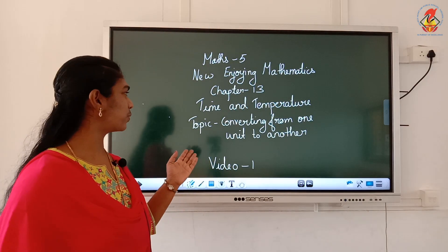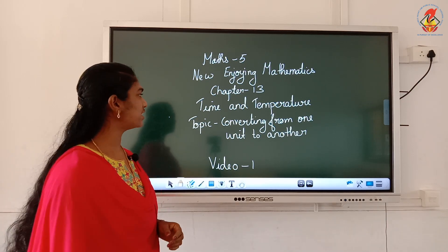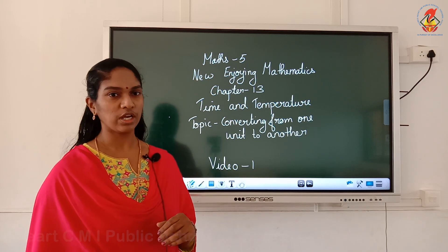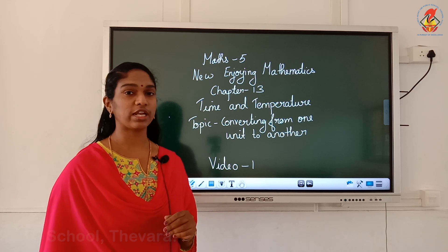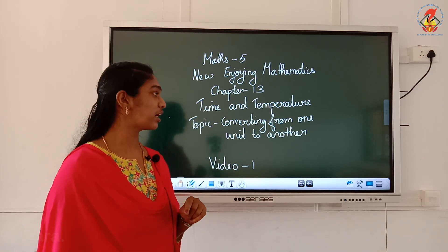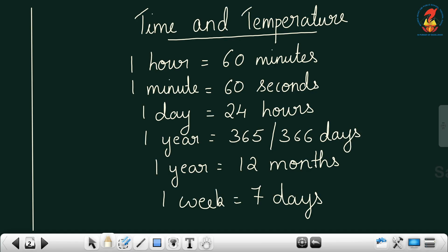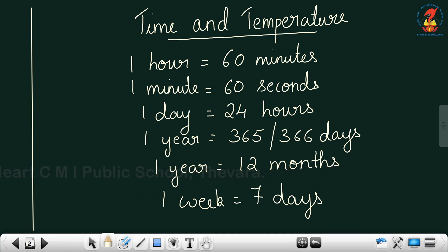Hi children, welcome back. Today we are starting with a new chapter — chapter 13, that is Time and Temperature. In this video we are going to discuss how to convert from one unit to another unit related to time. The units of time: one hour is equal to 60 minutes, one minute is equal to 60 seconds, one day equal to 24 hours, one year equal to 365 days (or 366 for a leap year), one year equal to 12 months, and one week equal to 7 days.